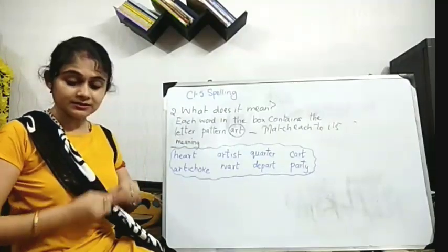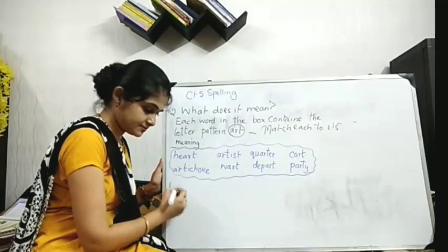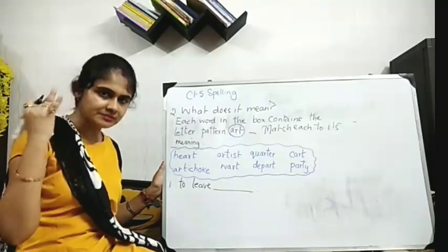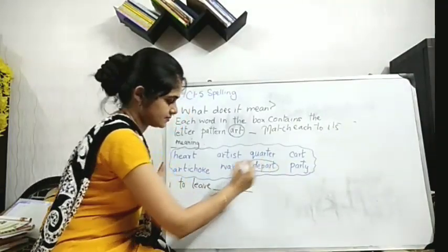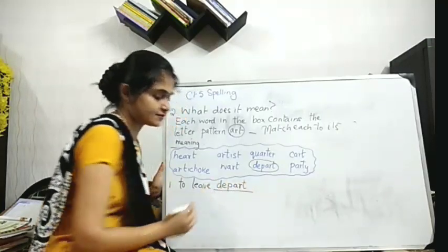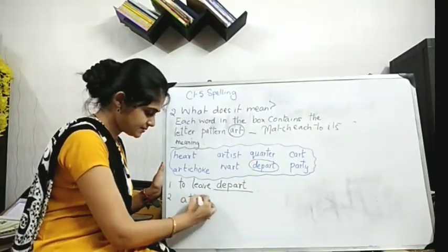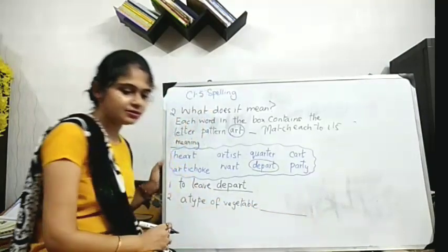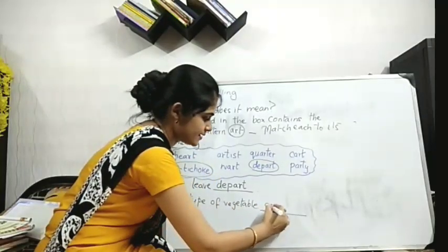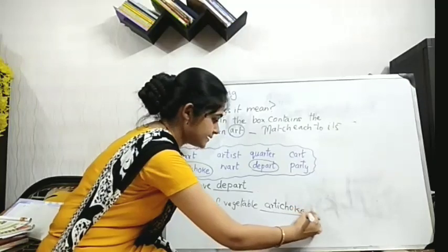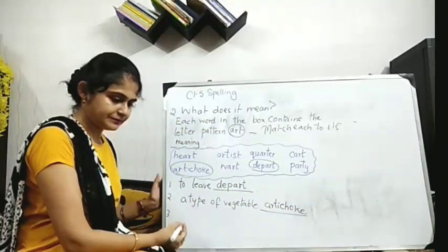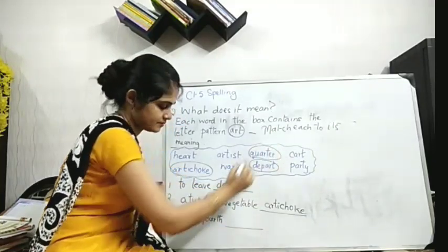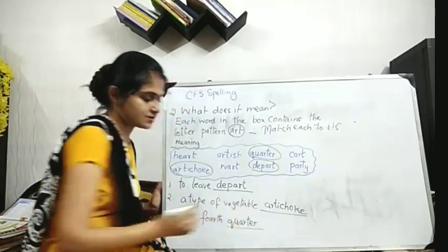Now let's see what are the meanings. Number one: to leave - what is the meaning of this? To leave for some other place is depart, right? So we will write here depart, one done. Number two: a type of vegetable. Do you know artichoke is called a vegetable, this one. So A-R-T-I-C-H-O-K-E, done. Next, number three: one fourth means quarter, right? So it's here quarter, we can write quarter. One fourth is quarter, done.